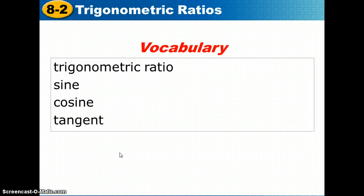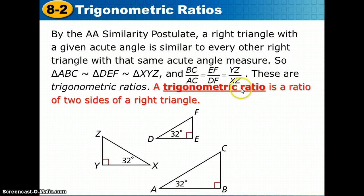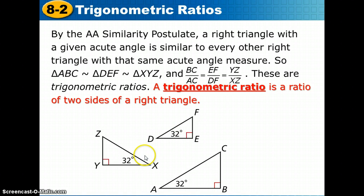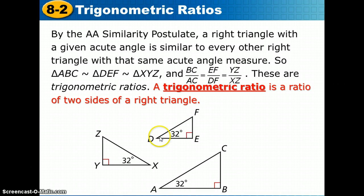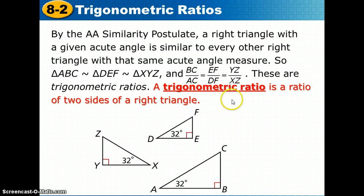The vocabulary terms we'll cover include trigonometric ratio, sine, cosine, and tangent. By the Angle-Angle Similarity Postulate from Chapter 7, a right triangle with a given acute angle is similar to every other right triangle with that same acute angle measure. This means ratios like BC/AC, EF/DF, and YZ/XZ are all equal for triangles sharing a 32-degree angle — these are called trigonometric ratios.